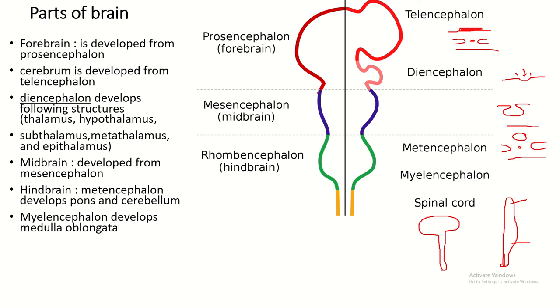From diencephalon, the thalamus, hypothalamus, subthalamus, metathalamus, and epithalamus are formed. Mesencephalon is converted into midbrain. Rhombencephalon is again divided into two parts: metencephalon and myelencephalon.